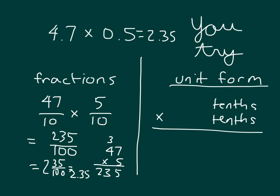Our answer should be 2.35. Using the unit form approach, you should have gotten that same answer. 5 times 4 is 20, plus 3 is 23. When we multiply tenths by tenths, we do get hundredths. 235 hundredths, that's 2.35 as that decimal. We're relating fraction multiplication with decimal multiplication.